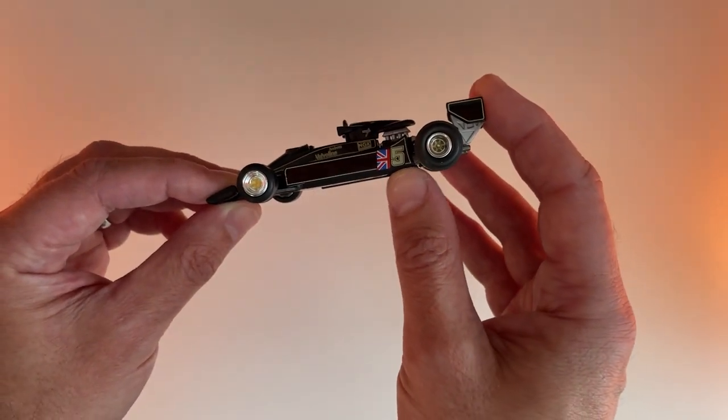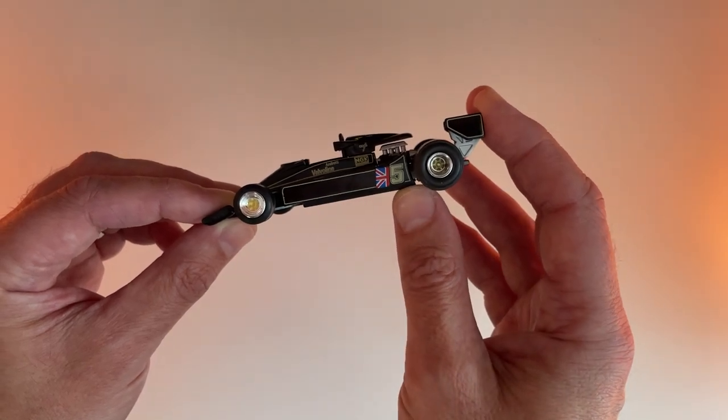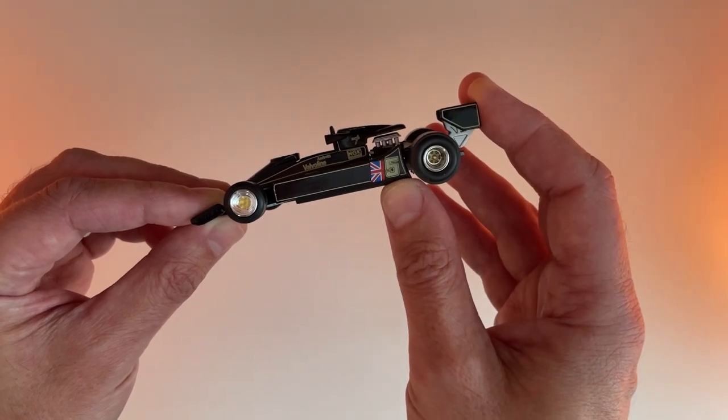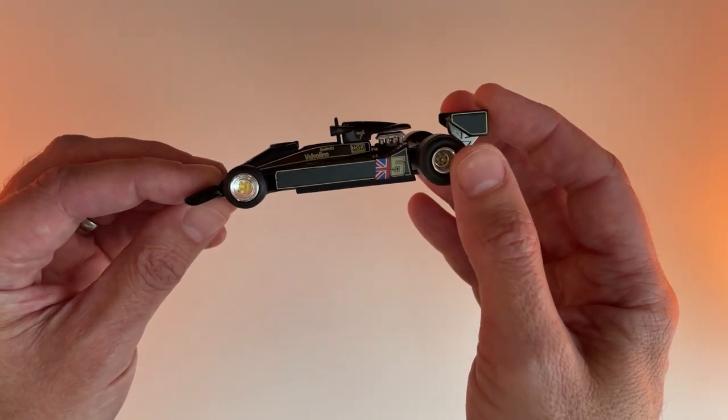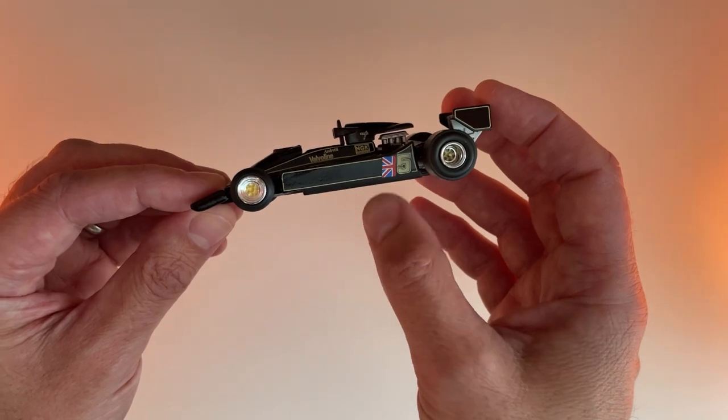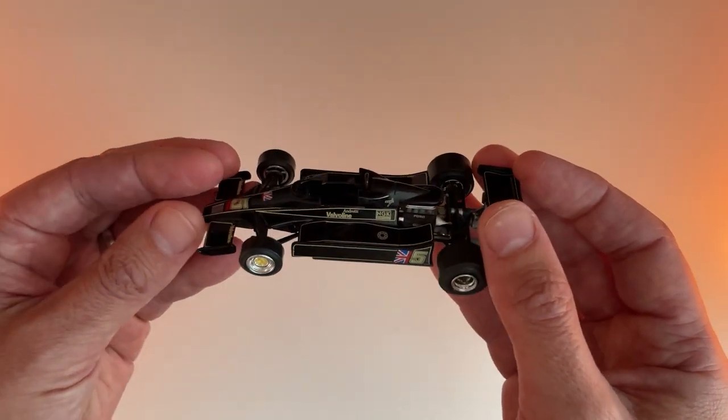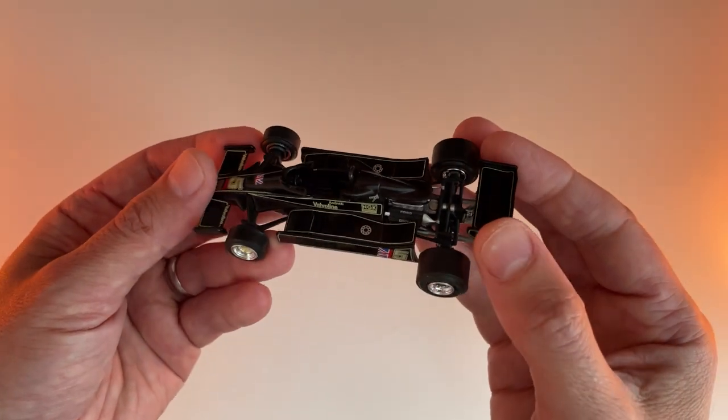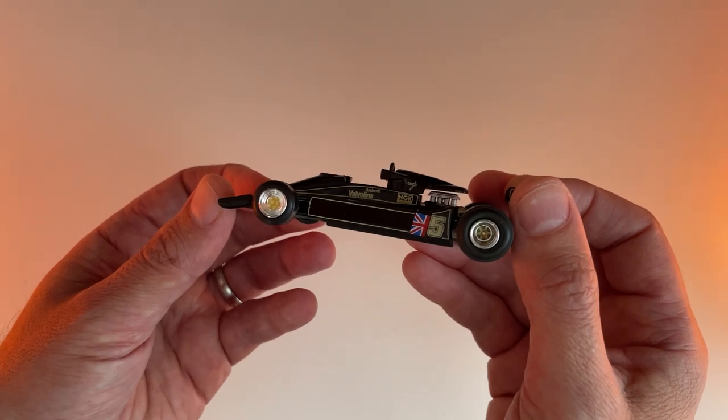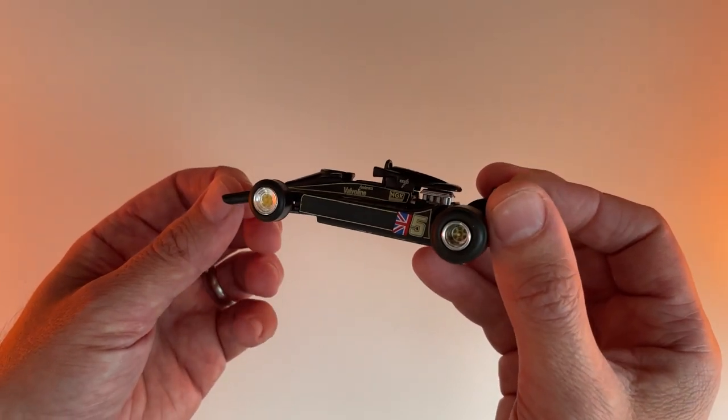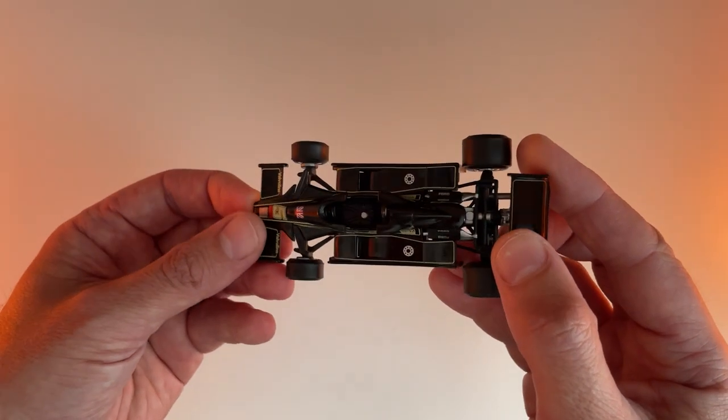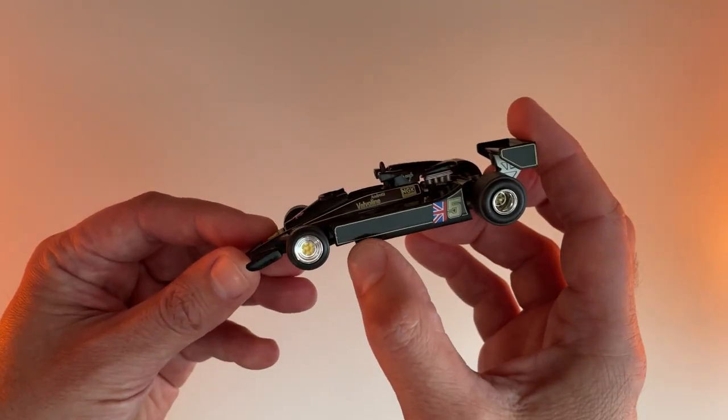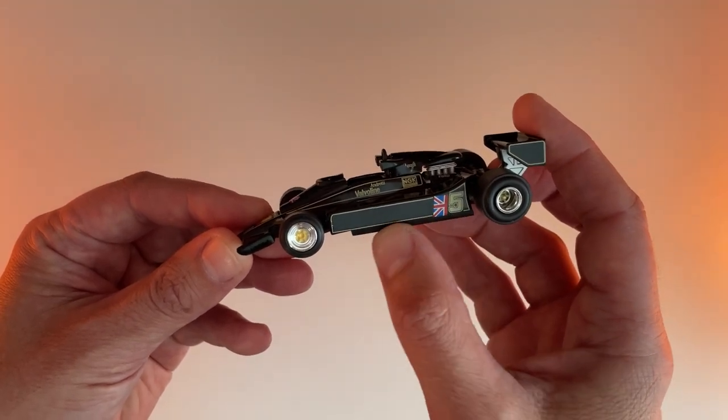With these skirts, he originally fitted brushes, just a long brush down the side, but that wasn't having the correct effect. Air was able to escape through it, so that didn't work. Then he changed it to plastic skirts, but that wore out too quickly. It was too abrasive on the tarmac and got damaged and wore down. So he settled on rubber skirts, and that proved to be the perfect material.